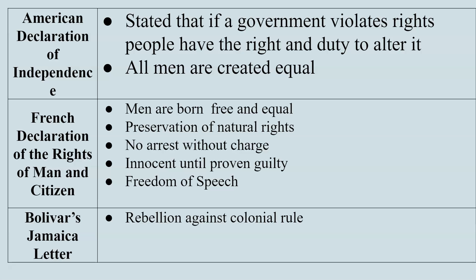The French Declaration of the Rights of Man and of the Citizen takes those ideas even further, combining the ideas of the American Revolution, the U.S. Constitution, and Enlightenment thought. It states that all men are born free and equal, tries to preserve natural rights, and includes protections like not being arrested without charge. This begins to establish the idea that you are innocent until proven guilty and that people have freedom of speech — though the French went on to violate many of these during the Reign of Terror.